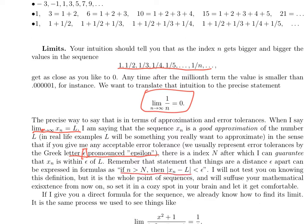The mathy way to say that is: if your index is greater than capital N, if you're past that point in the sequence, then remember x_n minus L in absolute value is how far apart x_n and L are. So to say that the error, the distance between them, is less than epsilon, is to say that they're accurate to that error tolerance.